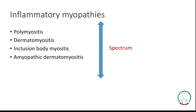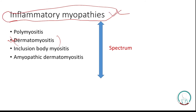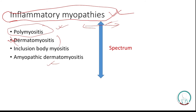Our second main topic is dermatomyositis, but first we should understand inflammatory myopathies. Inflammatory myopathies is a spectrum: at one end is polymyositis, with multiple muscle involvement and minimal skin involvement; at the other end is amyopathic dermatomyositis, with predominant skin involvement and less muscle involvement. There are also classic dermatomyositis and inclusion body myositis. In dermatomyositis, there is involvement of the skin and muscles. The patient presents with proximal muscle weakness — the patient cannot squat and has difficulty standing up — along with some skin changes.